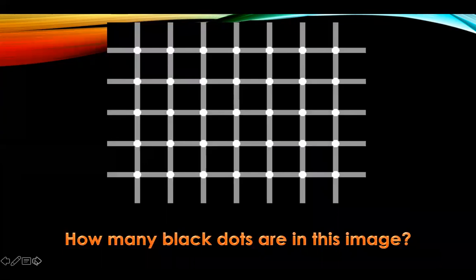In this slide, how many black dots are in each image? Just take a moment and look at it. So the answer is actually zero. This is an optical illusion. The placement of the black squares along with the white circles give the illusion — when your eye is looking across the picture — that black dots appear, but there are actually no black dots in this image.